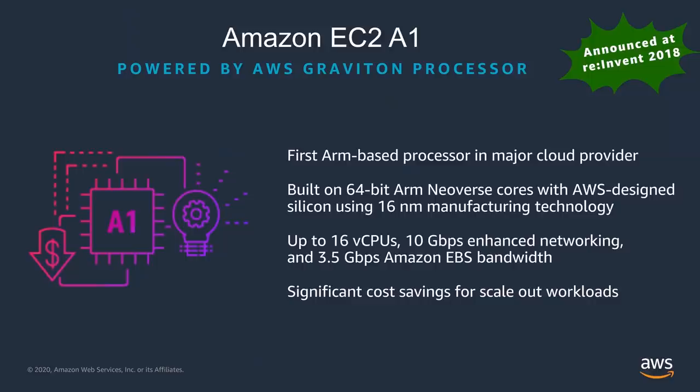At re:Invent 2018 we launched the first generation ARM-based processors that power our EC2 A1 instance. Graviton was delivered with 45% lower cost for scale-out workloads. This was our first general purpose processor, but it was far from our first complex semiconductor part.